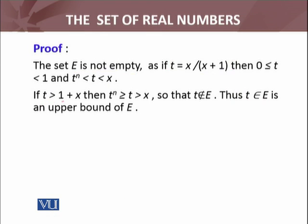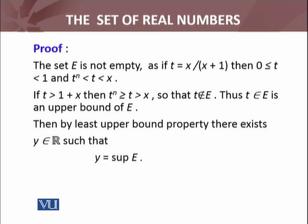If t is greater than 1 + x, then t^n—for numbers greater than 1, when you take a positive integer power n, it will increase. So if t > 1 + x, then t does not belong to the set E. It means 1 + x is an upper bound of E. So E is a set which is bounded above. The upper bound is established. Since the set of real numbers satisfies the least upper bound property, by the least upper bound property, there exists y ∈ ℝ such that y is the supremum of the set E.